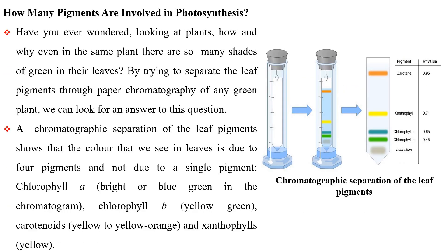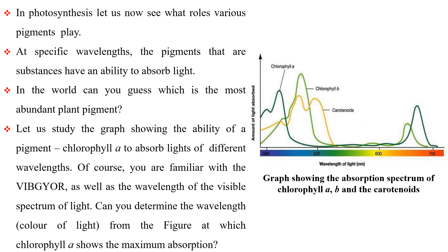How many pigments are involved in photosynthesis? Have you ever wondered, looking at plants, how and why even in the same plant there are so many shades of green in their leaves? By trying to separate the leaf pigments through paper chromatography of any green plant, we can look for an answer. A chromatographic separation of the leaf pigments shows that the color we see in leaves is due to four pigments and not a single pigment: chlorophyll A, chlorophyll B, carotenoids, and xanthophylls. In photosynthesis, let us now see what roles various pigments play. Pigments are substances that have an ability to absorb light at specific wavelengths. Can you guess which is the most abundant plant pigment in the world?